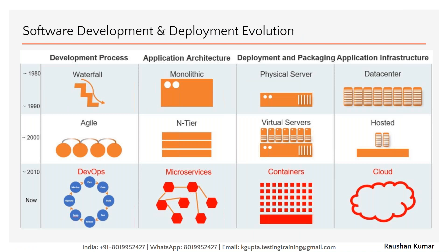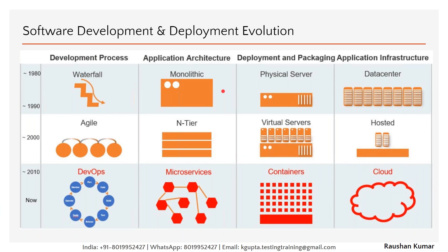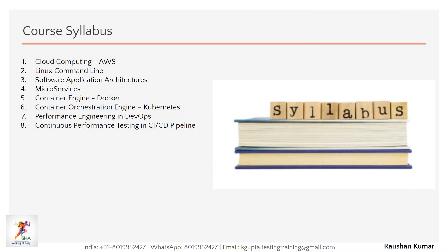Before I jump into the course syllabus, my course revolves around all four topics. On the cloud front, I am covering AWS — from scratch. That's my tagline. If you do not have any knowledge, no problem, we have you covered. I'll take one cloud service provider; it doesn't mean I won't talk about Azure or GCP. If you know one cloud service provider, it's easy to relate and learn others — mostly the name changes.